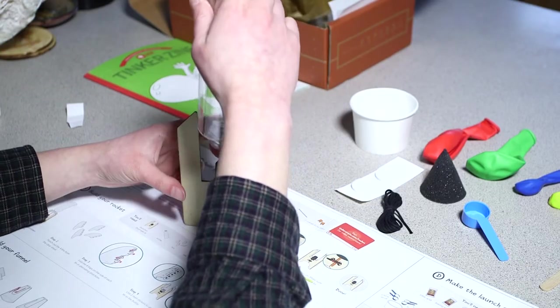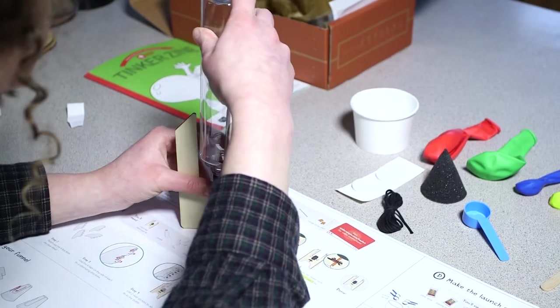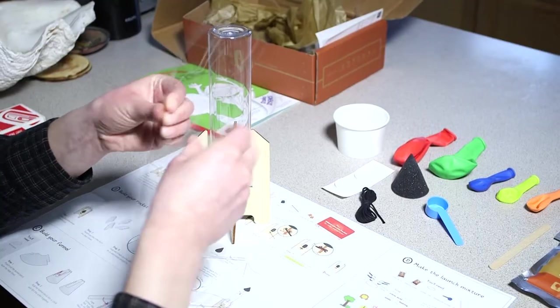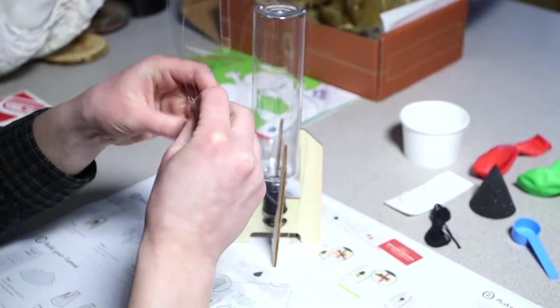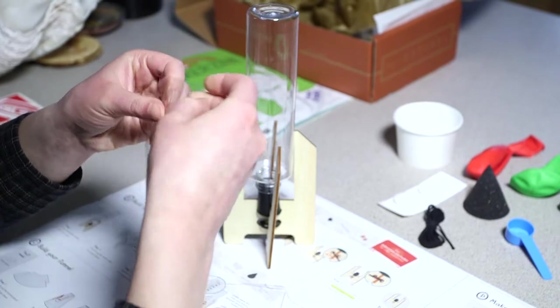Step number one: press the bottle down onto the cork. Step number two: punch out the four fins from the clear sheet.